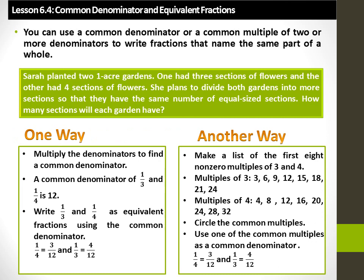Another way is to make a list of the first 8 non-zero multiples of 3 and 4. Multiples of 3 are 3, 6, 9, 12, 15, 18, 21, 24. Multiples of 4 are 4, 8, 12, 16, 20, 24, 28, 32. The common multiples are 12 and 24, and the least common multiple is 12. So use 12 as the common denominator of both fractions: 1 over 4 is equal to 3 over 12 and 1 over 3 is equal to 4 over 12.